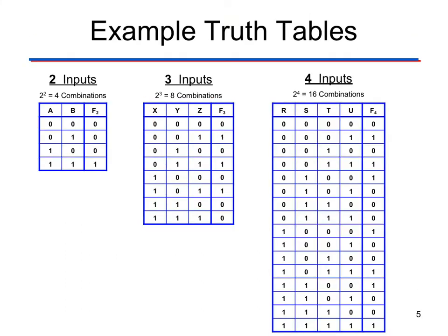Here are examples of different truth table sizes. If we have two inputs, that's the first truth table — two to the second power gives four combinations. For three inputs, that's two to the third power — eight combinations, so eight rows. And two to the fourth for four inputs gets kind of crazy because we've got 16 combinations.